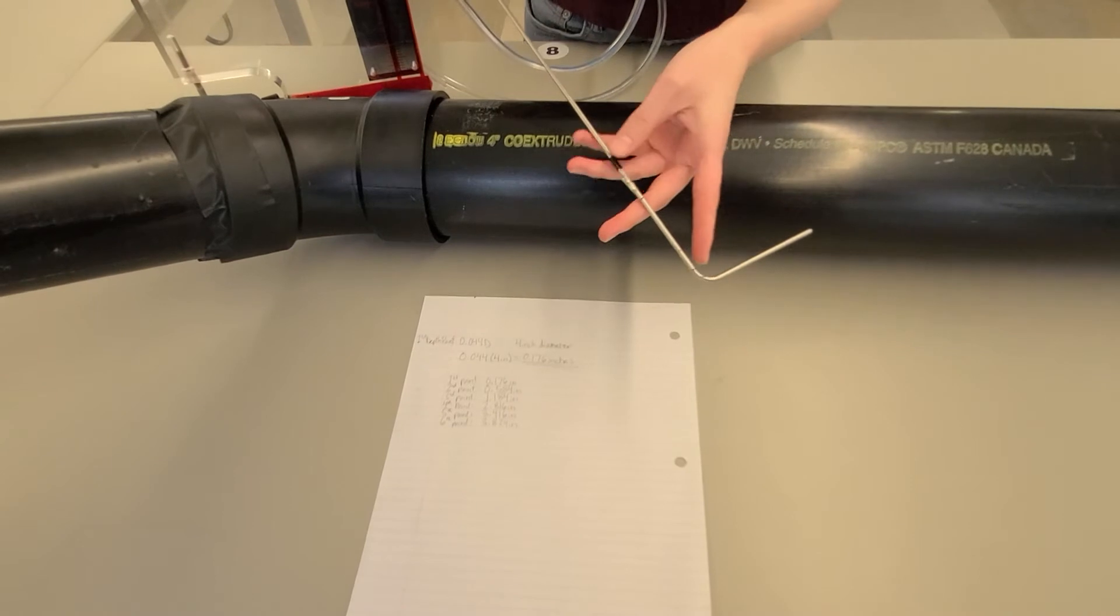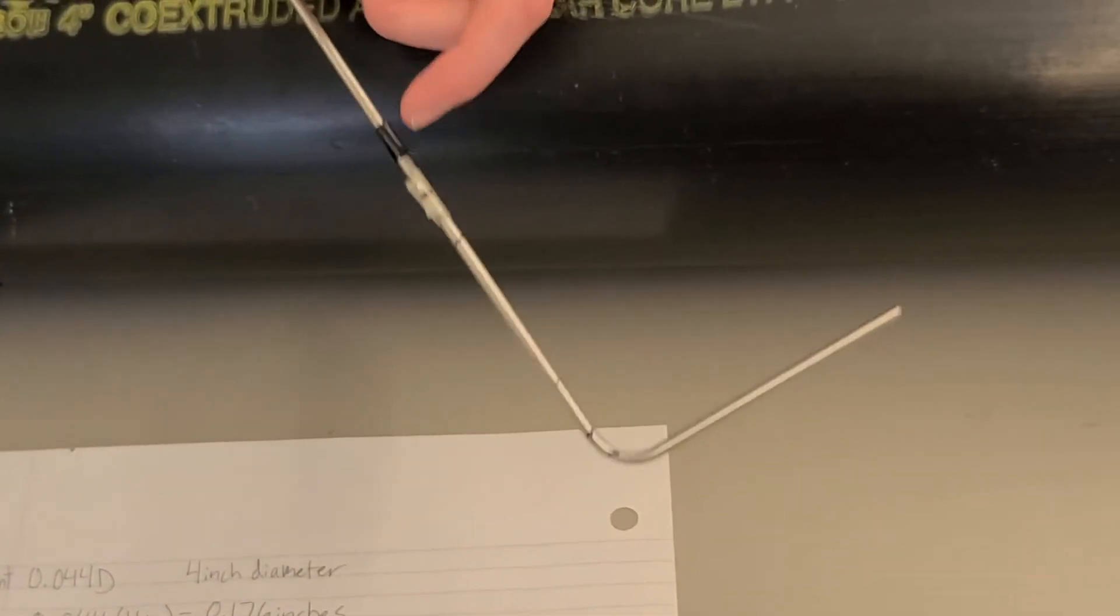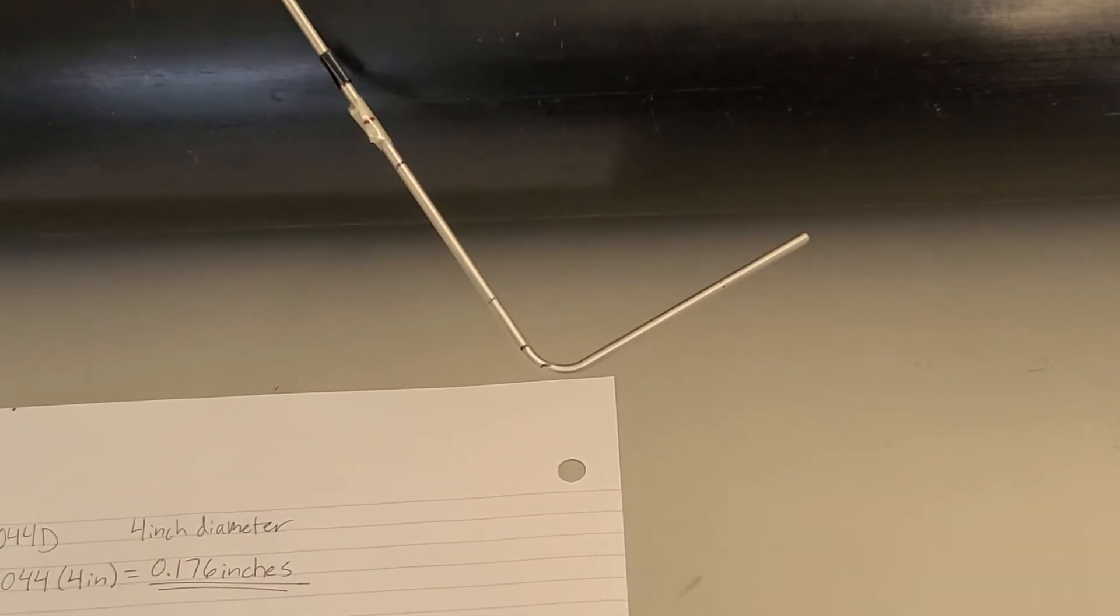On our pitot tube, we've marked out each point of the duct traverse. Note that it's much easier to conduct a velocity traverse when you have previously marked your instrument instead of measuring as you go.